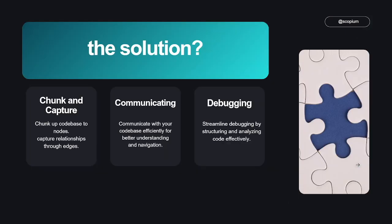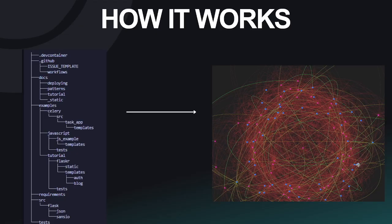So our solution: what if we could chunk up our codebase and capture it within a graph? That way, we can retrieve only the relevant context for our query, leaving out unnecessary code. Basically, we can maximize the information by minimizing the redundant code passed to the LLM.